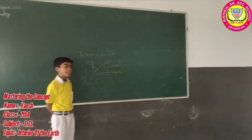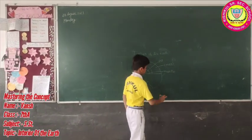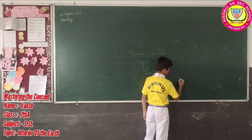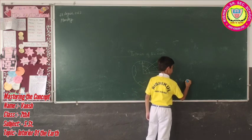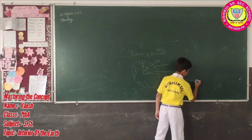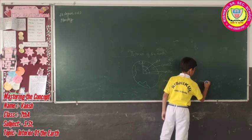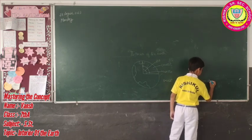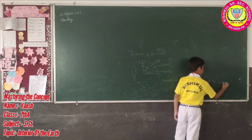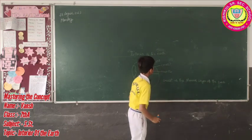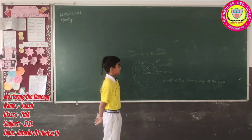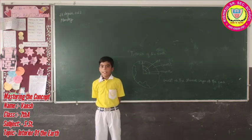The crust is the finest layer of the earth. The core is made up of nickel and iron. The iron which is used in the core is various.